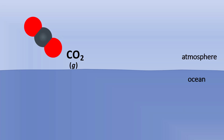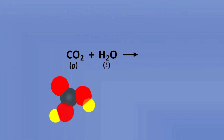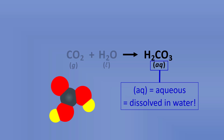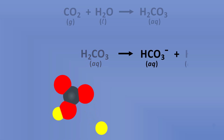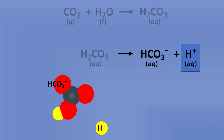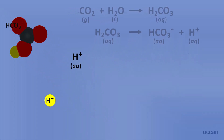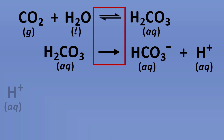Carbon dioxide in the atmosphere will dissolve in ocean water, and the result is a reaction between CO₂ and water producing carbonic acid, aqueous H₂CO₃. Aqueous refers to a compound dissolved in water. Carbonic acid H₂CO₃, when aqueous, also undergoes a reaction — it loses a hydrogen ion and the products are hydrogen carbonate HCO₃⁻ aqueous and an aqueous hydrogen ion. These reactions are reversible, shown by the double arrow, meaning the products can react and become reactants.